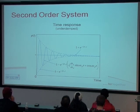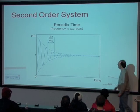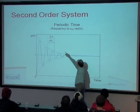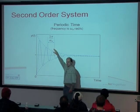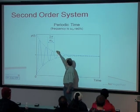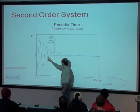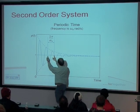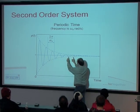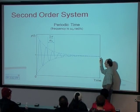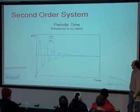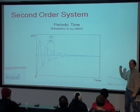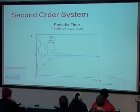The damped natural frequency is the frequency of oscillation. The period is two pi divided by omega, and that's the time it takes for one oscillation — and that's constant. It doesn't matter what the amplitude is; the period here is the same as the period over there. It doesn't change as the oscillation dies away. But it's not the natural frequency omega_n — it's the damped natural frequency omega_d.